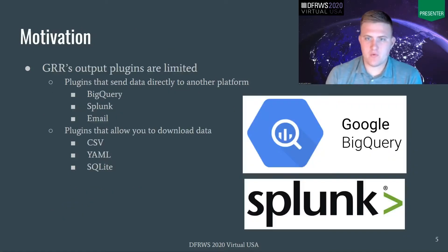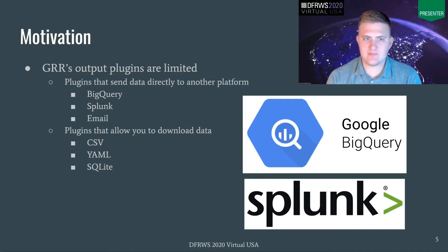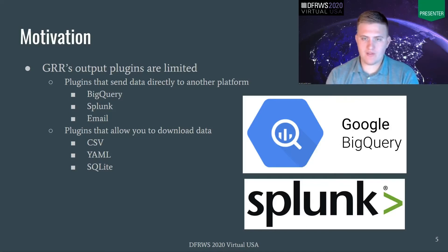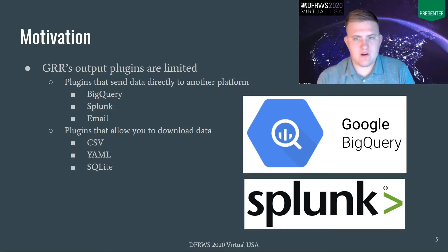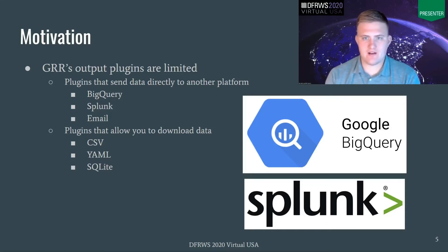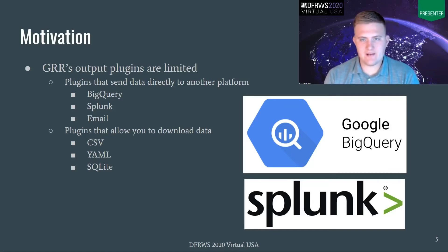The motivation for our work comes from the fact that GRR's output plugins are somewhat limited. There are two types of plugins. First are plugins that support sending data directly to another platform — the most popular of these are BigQuery and Splunk. Both of these are enterprise-ready solutions that allow you to index and visualize large amounts of data. However, for certain small to mid-sized companies they may not be an affordable option. The last option for these types of plugins is email, but obviously email is not going to be a manageable or scalable solution.